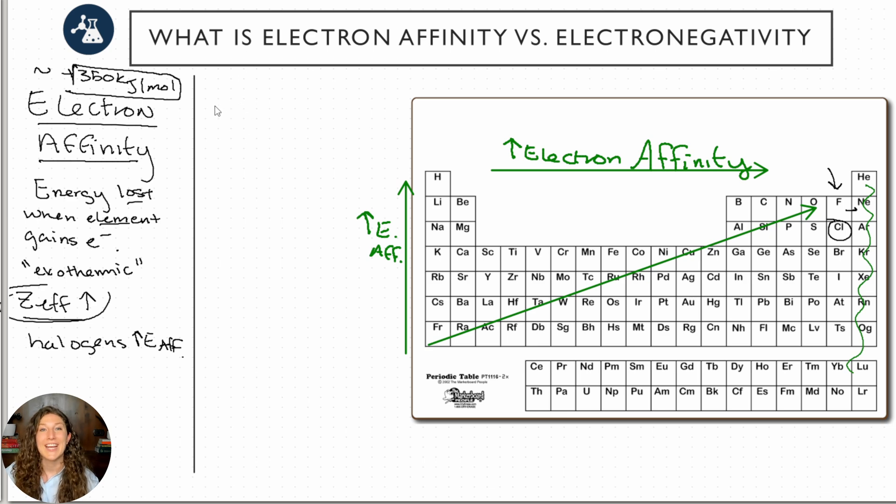Let's contrast this with electronegativity. Electronegativity is really similar in a lot of ways to electron affinity where we're talking about the attraction of an atom for an electron. The difference is that electronegativity is a measure of the attraction that an atom has on an electron in a chemical bond. So we have to be in a molecule, in a molecular bond, and we're measuring how much pull that atom has on the electrons in the bond.